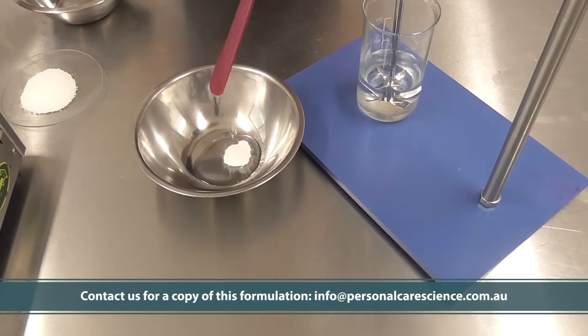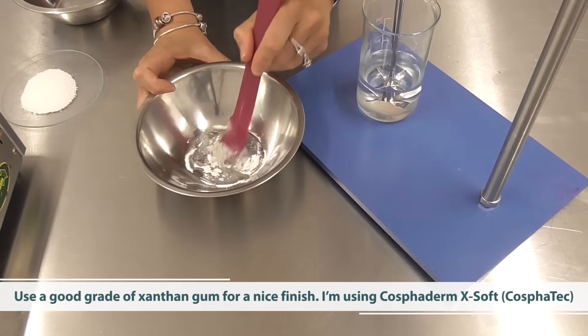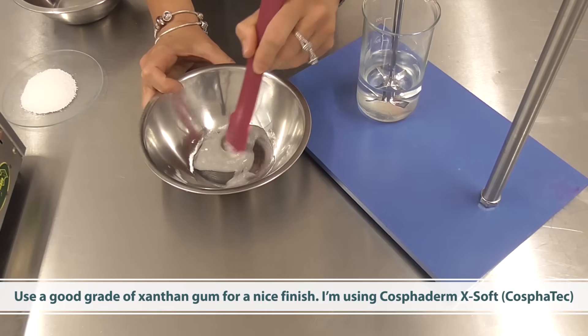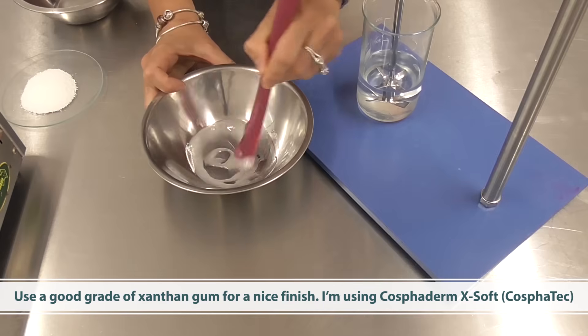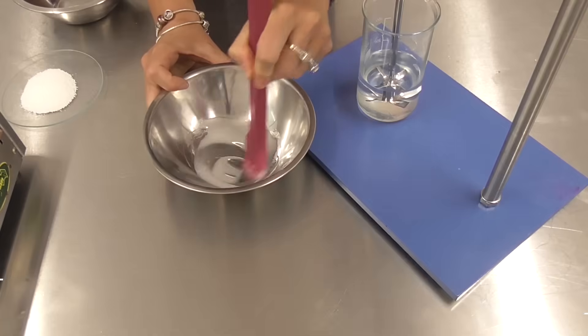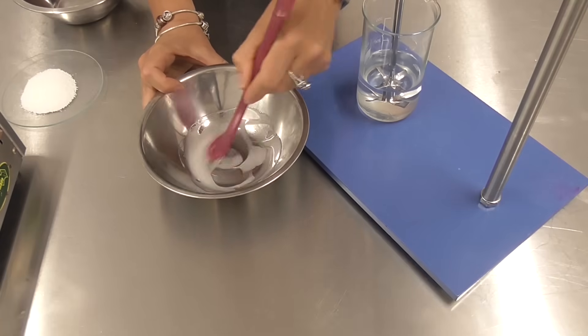The first thing is we are going to slurry our gum. I am using a really good grade of xanthan gum here so that we don't end up with a really clumpy or stringy product. This is Cosforderm X soft and it's going to help us achieve a nice aesthetic look to the finished product. So I'm just slurrying this first and of course I'm needing to use organic glycerin to help with my compositional inputs.